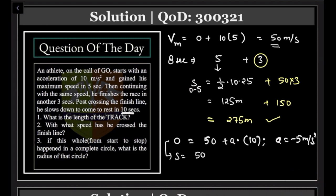...minus (1/2)·5·t². This is 500 minus 250, coming out to be 250.